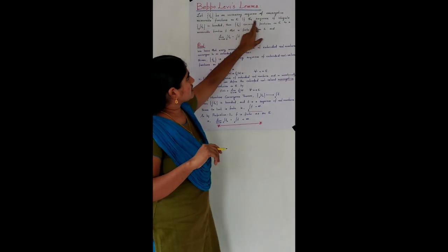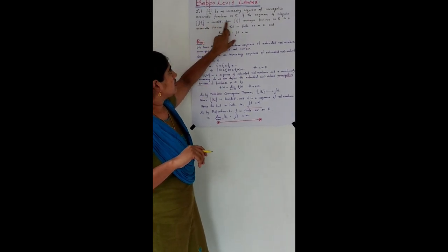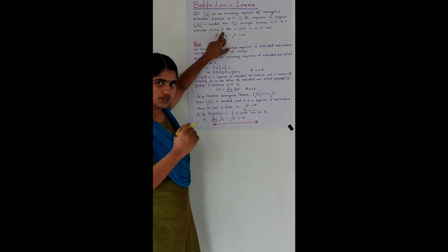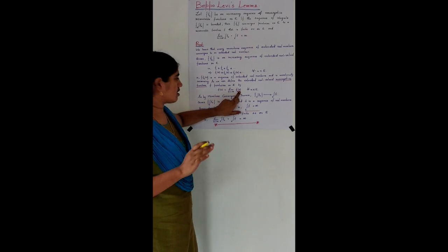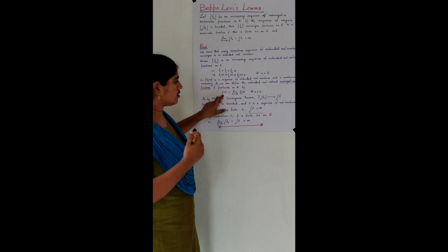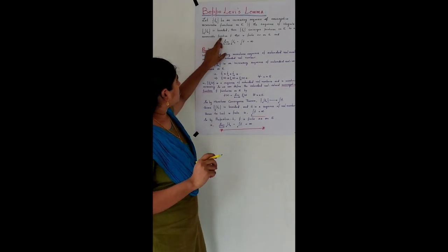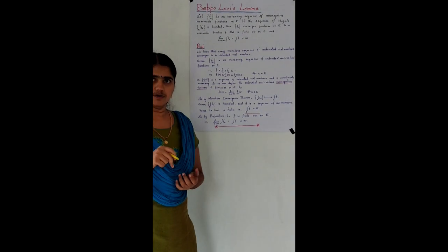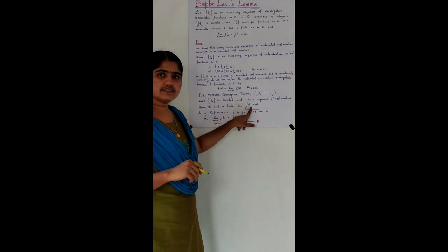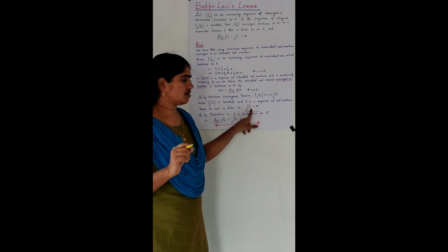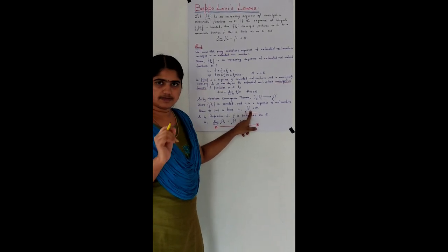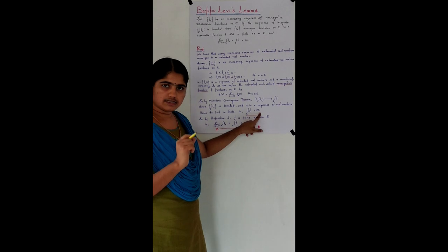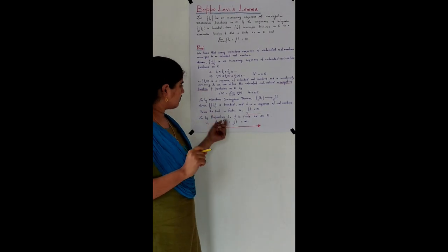We showed that the sequence {Fₙ(x)} converges to a measurable function F, and that F is measurable. Moreover, we need to show that F is finite almost everywhere on E. That follows from the proposition we already proved: if F is a non-negative measurable integrable function, then F is finite almost everywhere on E. Since the integral over E of F is finite, F is integrable, and hence by that proposition, F is finite almost everywhere on E.